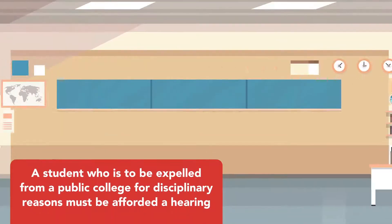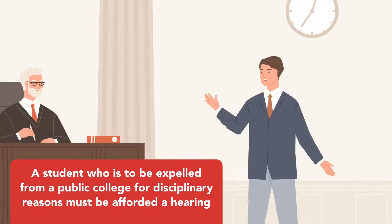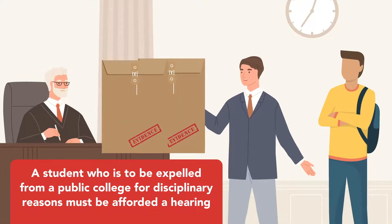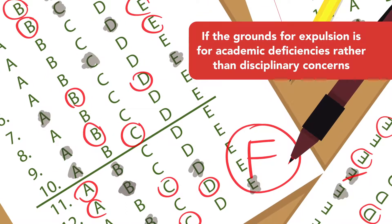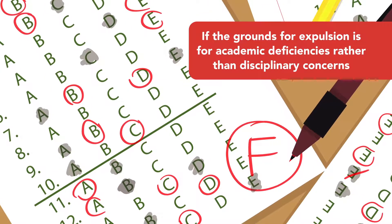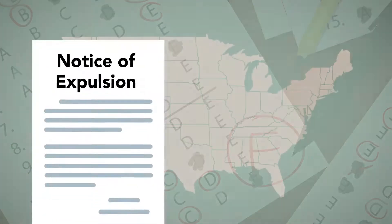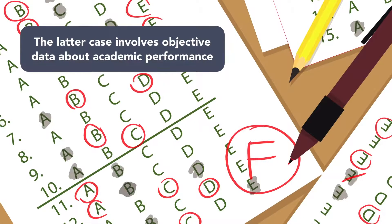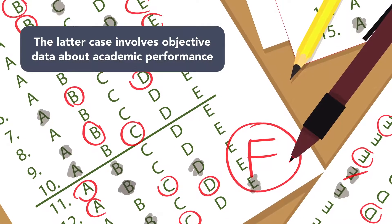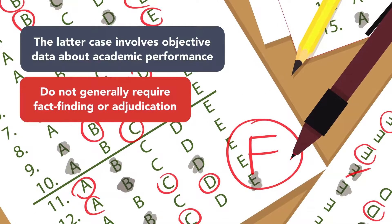For example, a student who is to be expelled from a public college for disciplinary reasons must be afforded a hearing and the right to present evidence. However, if the grounds for expulsion is for academic deficiencies rather than disciplinary concerns, then no hearing is required — only notice of the pending expulsion and the opportunity to improve academic performance. The difference is that the latter case involves objective data about academic performance, which does not generally require fact-finding or adjudication.